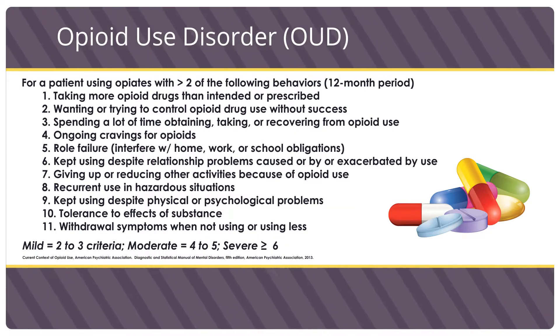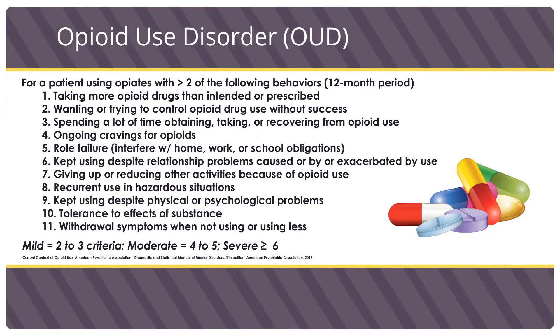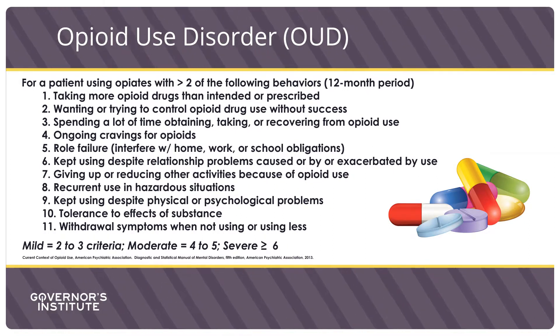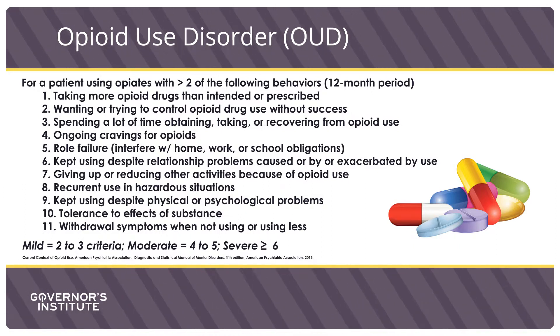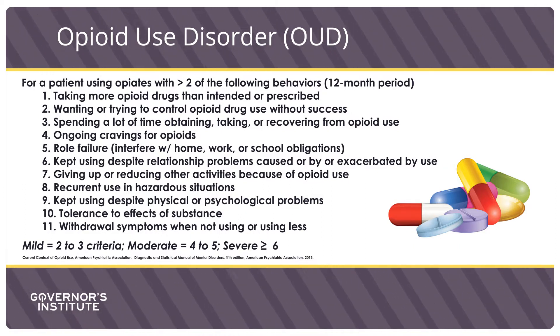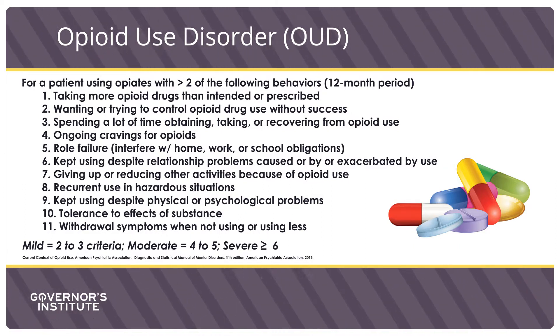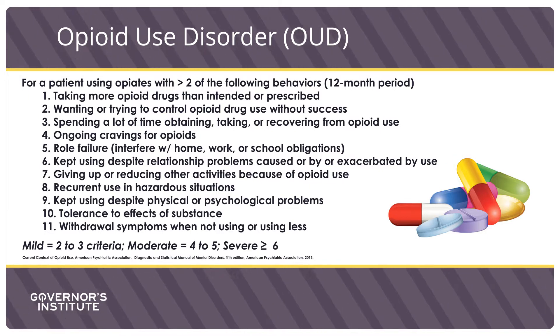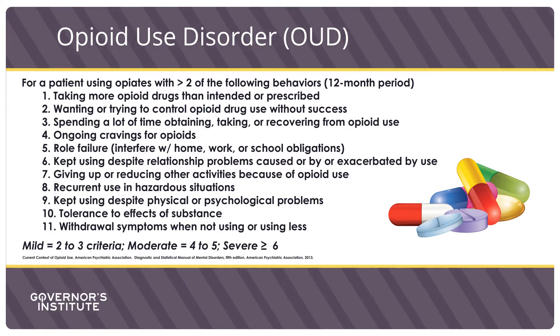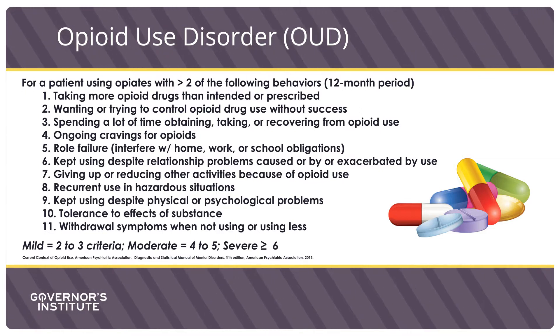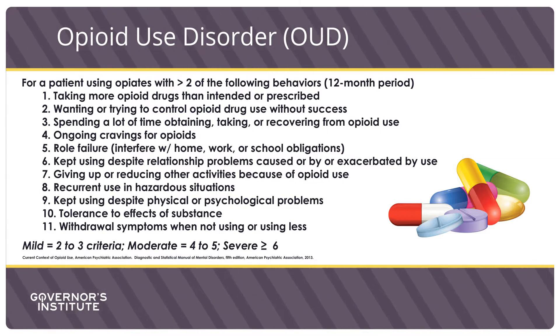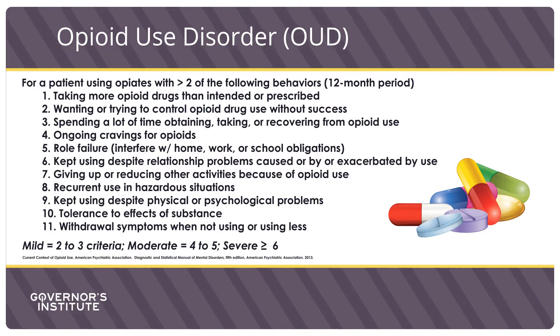Addiction in DSM-5 is known as a substance use disorder, and for opioids specifically as opioid use disorder. Opioid use disorder is diagnosed based on the number of these behaviors over a 12-month period. A person with mild opioid use disorder meets 2-3 criteria, not just tolerance (criterion 9) and withdrawal (criterion 10). Moderate would be 4-5 criteria, and a person with severe opioid use disorder would have 6 or more criteria.